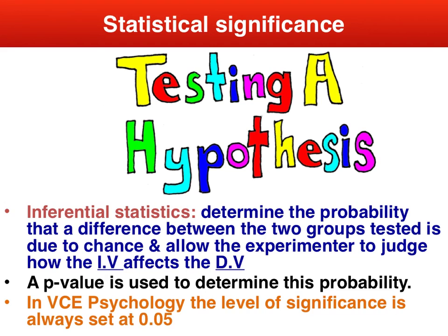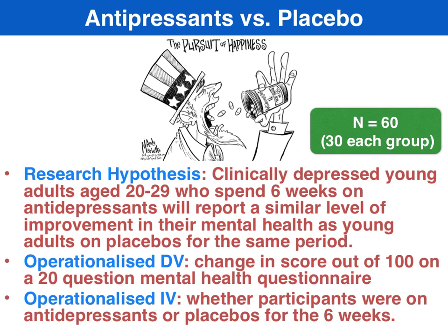Importantly, though, in university psychology you'll learn that we can actually lower that confidence interval to 0.01 or 0.001. But in VCE psychology, it's always set at 0.05. To demonstrate an application of a calculated p-value, I'm going to go through a hypothetical. The research hypothesis states that clinically depressed young adults aged between 20 to 29 who spend six weeks on antidepressants will report a similar level of improvement in their mental health as adults on the fake or placebos for the same period.